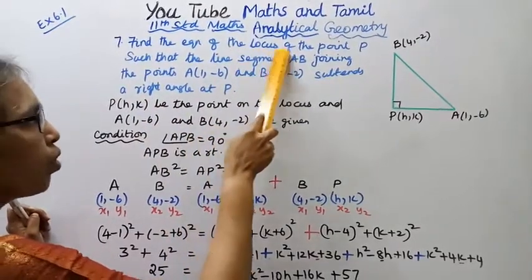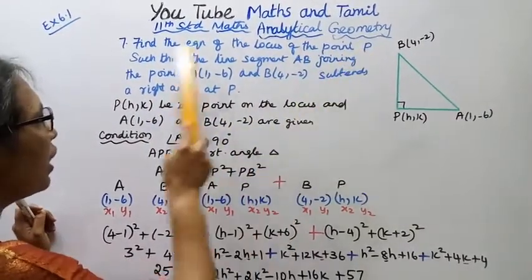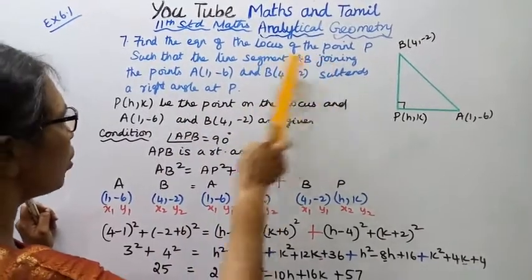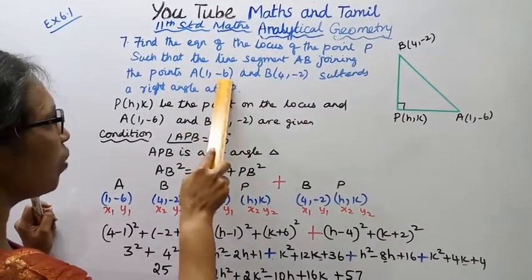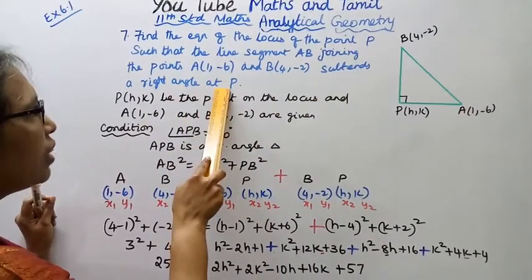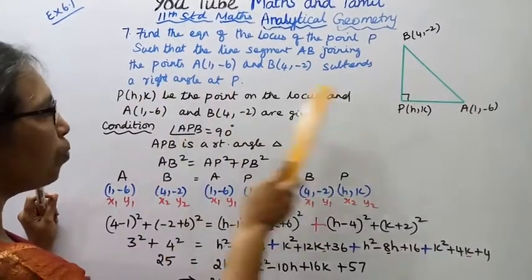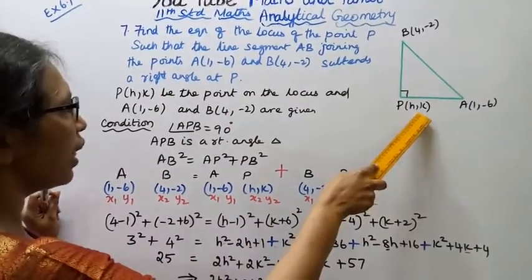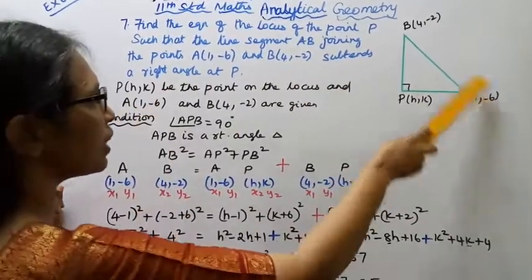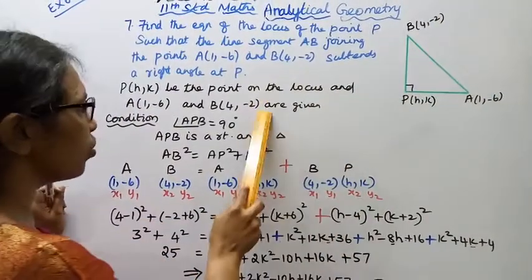Find the equation of the locus of the point P such that the line segment AB joining the points A(1,6) and B(4,2) subtends a right angle at P. P is the point (h,k) on the locus.